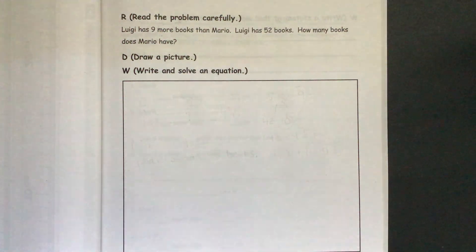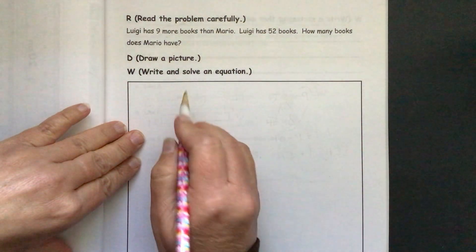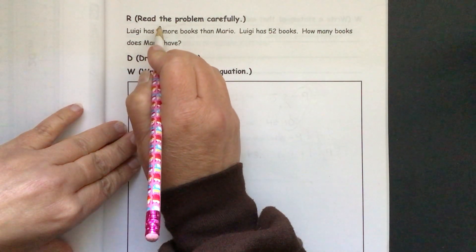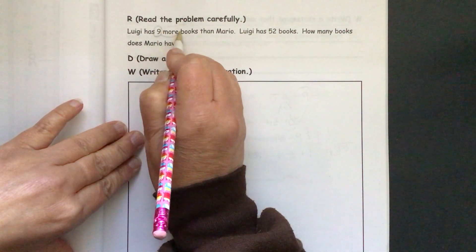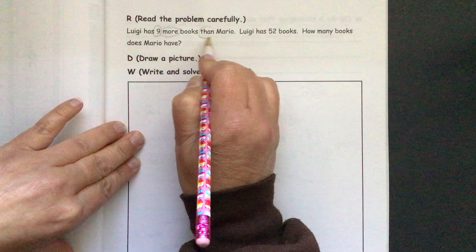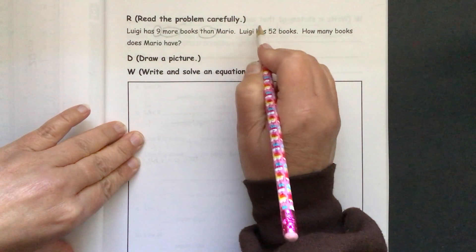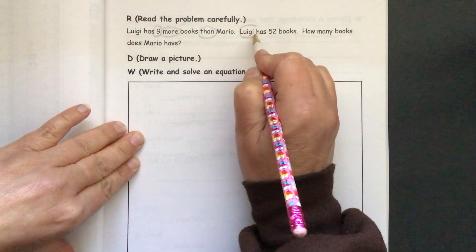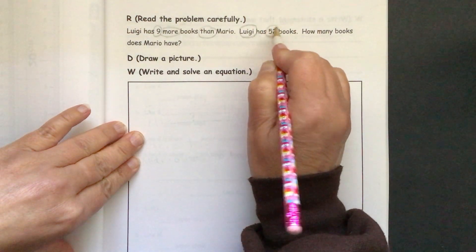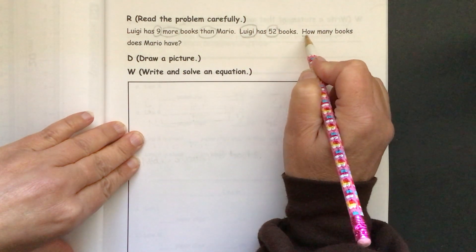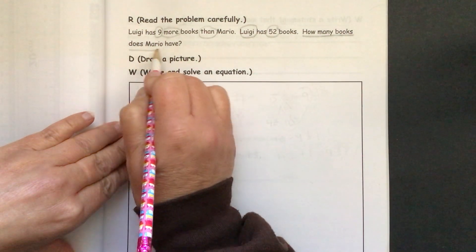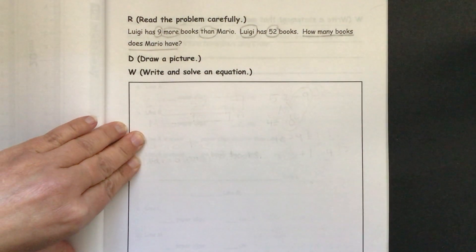We'll start with our application problem. Luigi has nine more books than Mario. Luigi has 52 books. How many books does Mario have? That is what we need to find out.